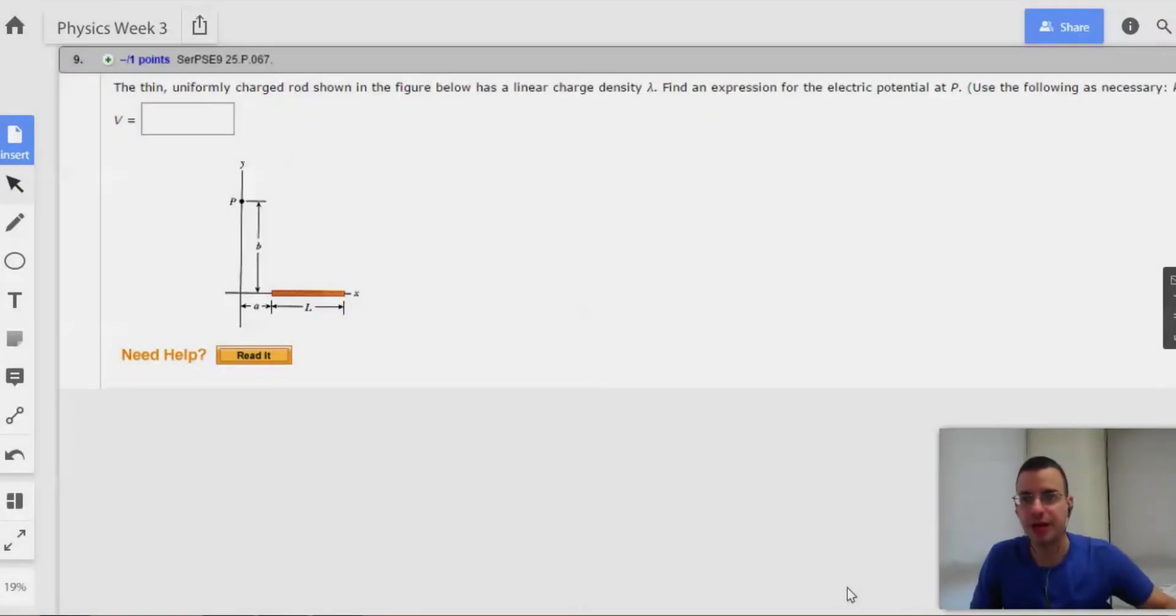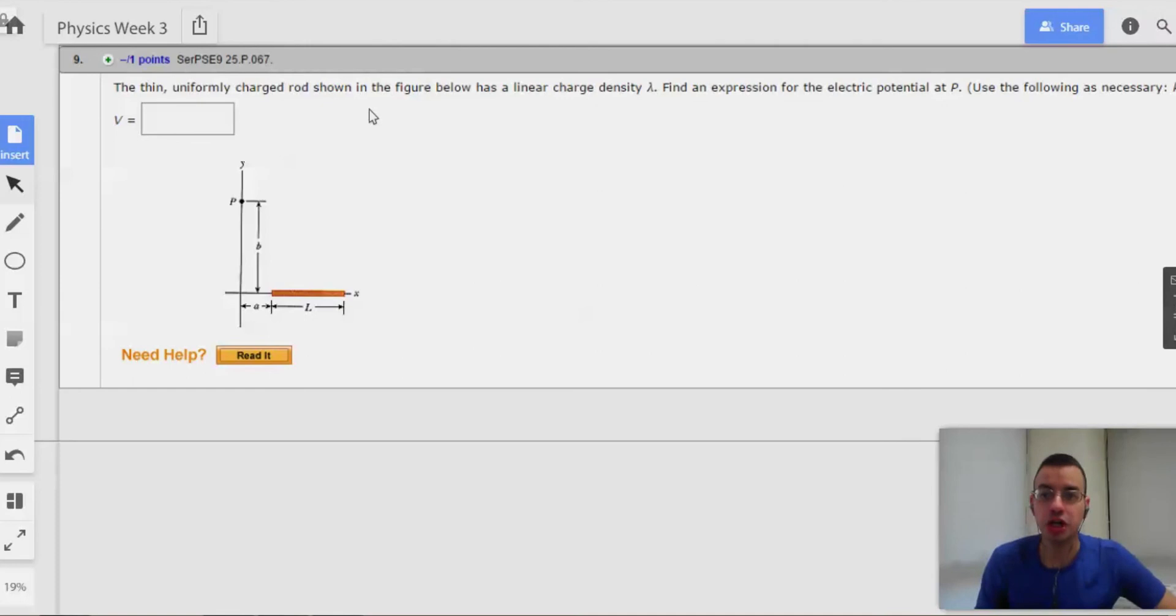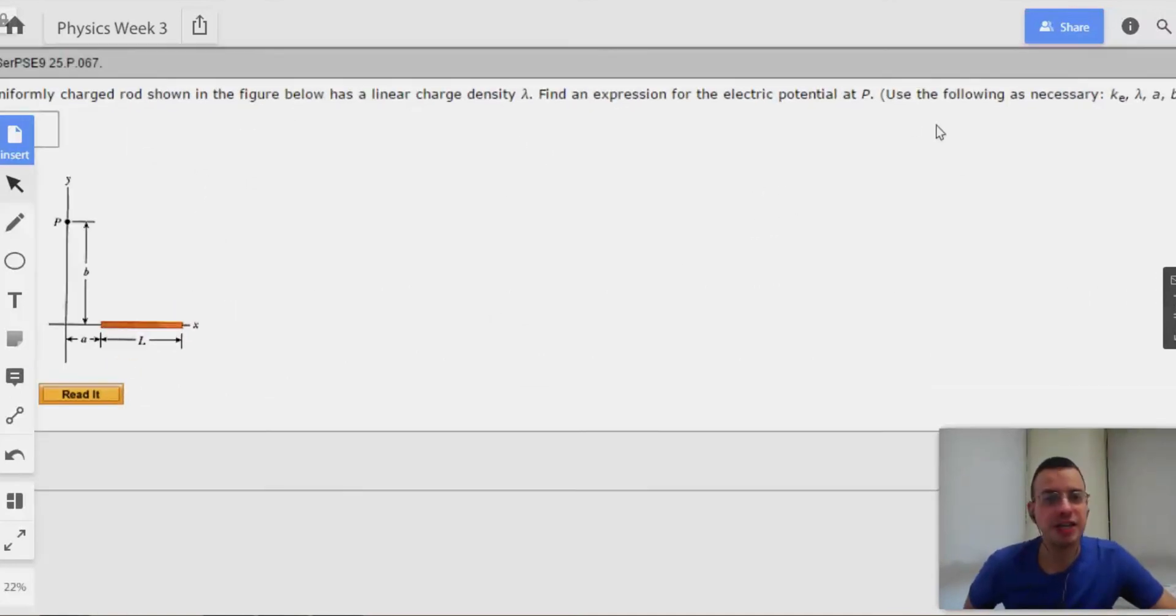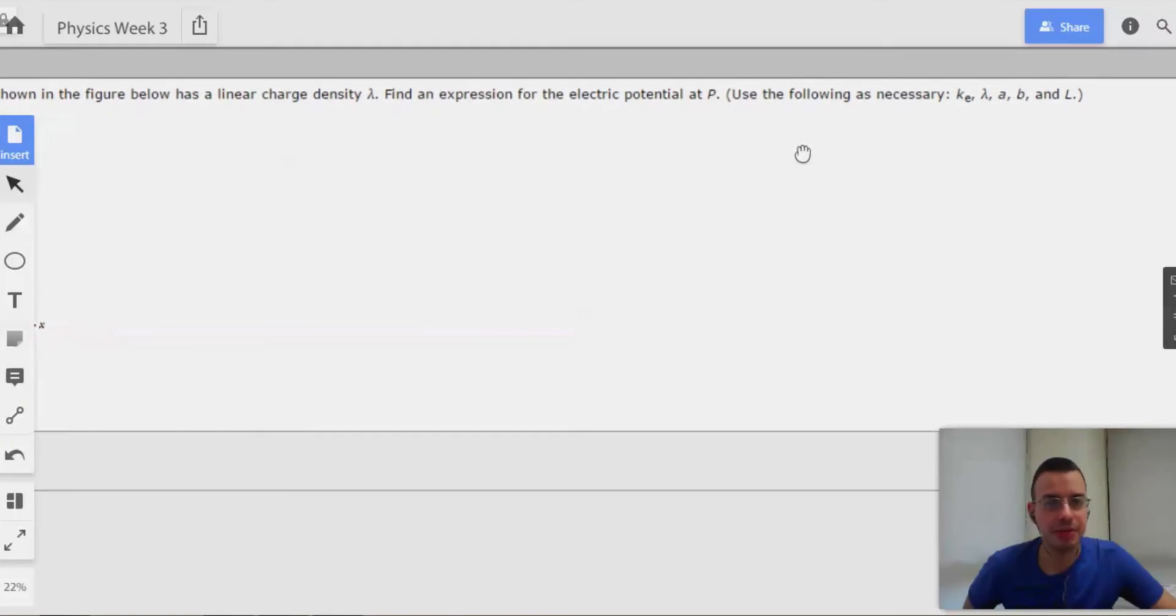Okay, problem nine, last problem. The thin, uniformly charged rod shown in the figure below has a linear charge density of lambda. Find an expression for the electric potential at point P. Okay, that's not too bad, kinda like the last one.